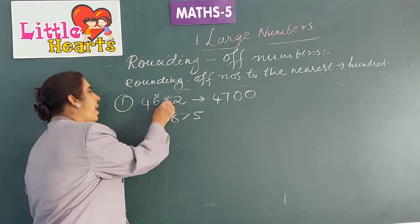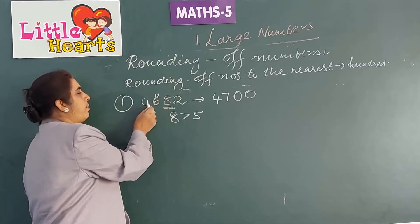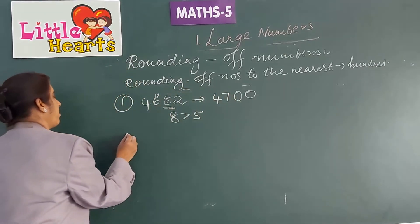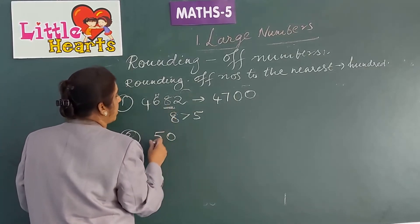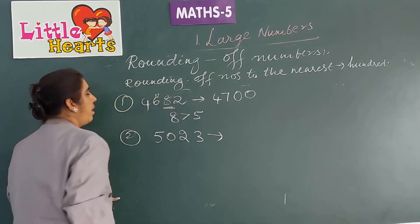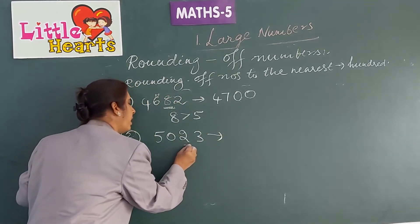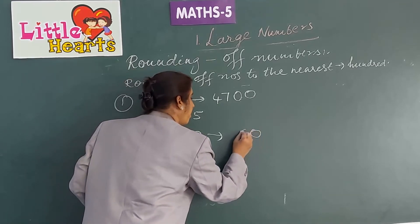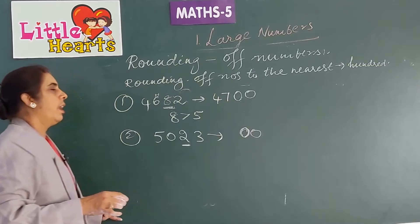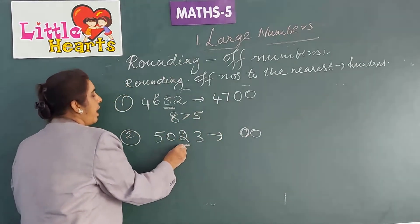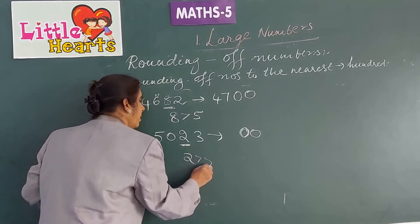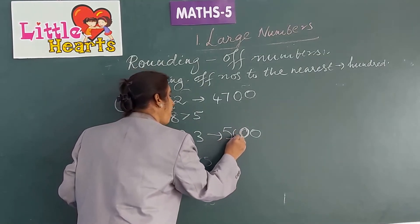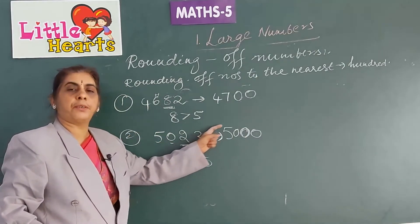If the tens place is 5 or more than 5, you have to add 1 to the hundreds place digit. Now take 5,023. To round to the nearest 100, check the tens place digit 2 and write 2 zeros in the ones and tens places. Since 2 is less than 5, there will be no change in the hundreds place. So 5,023 is rounded to 5,000.